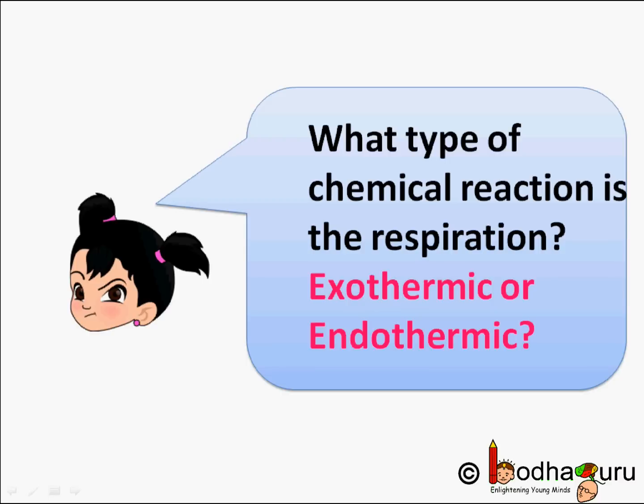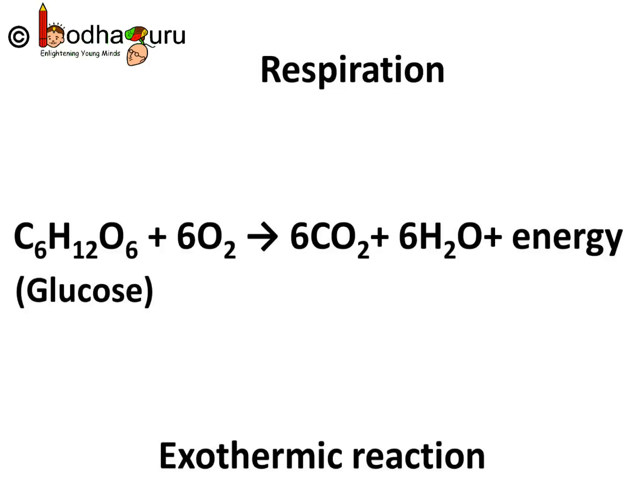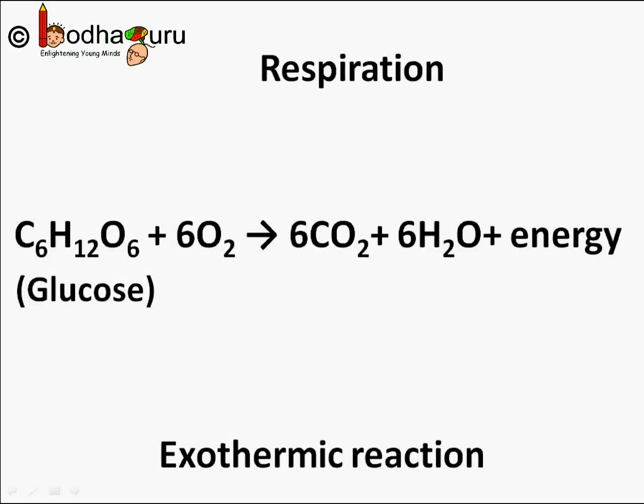You may wonder what type of chemical reaction respiration is — is it exothermic or endothermic? Through respiration, oxygen in our body is used and carbon dioxide is produced. Our body cells are burning food and producing carbon dioxide. The simple food, i.e. glucose, combines with oxygen in the cells of our body and provides energy. Glucose, represented as C6H12O6, plus 6O2 gives 6CO2 plus 6H2O plus energy. Energy is released in this reaction, hence respiration is an exothermic reaction.